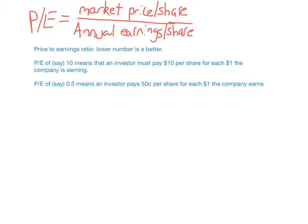So if the company is earning $1, you pay $10 per share; earning $2, you pay $20; earning $15, you pay $150; earning $1 million, you pay $10 million per share. A lower P/E number is better — it means the company is more efficient. If they need $20 per share from each shareholder but only earn $1 for every $20 invested, that doesn't suggest great things about the business.